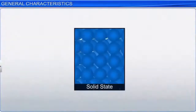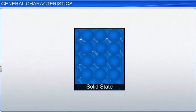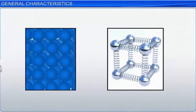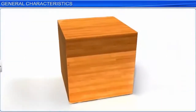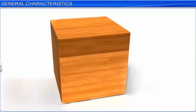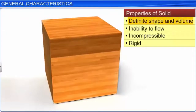On the other hand, the constituent particles in solids are held together by strong forces of attraction. In other words, the constituent particles are closely packed. However, these particles can still vibrate about their fixed mean positions. Solids possess some characteristic properties: they have a definite shape and volume, lack the ability to flow, are incompressible, and are rigid.